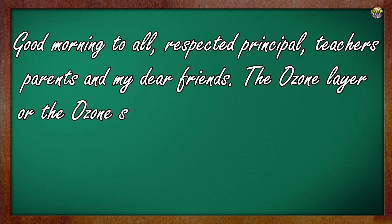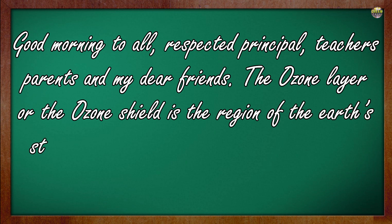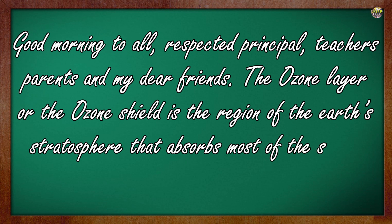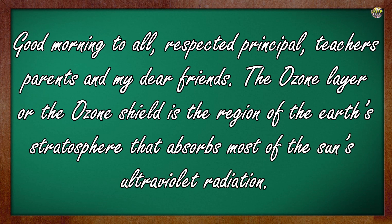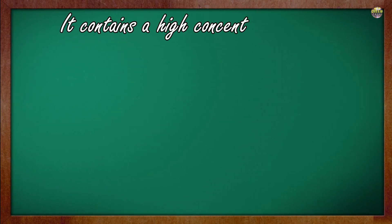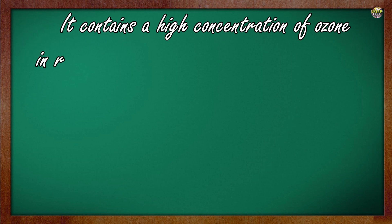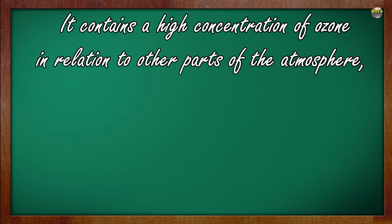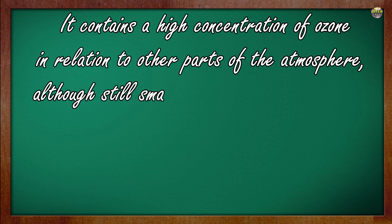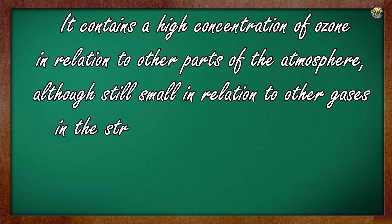The ozone layer, or the ozone shield, is the region of earth's stratosphere that absorbs most of the sun's ultraviolet radiation. It contains a high concentration of ozone in relation to other parts of the atmosphere, although still small in relation to other gases in the stratosphere.